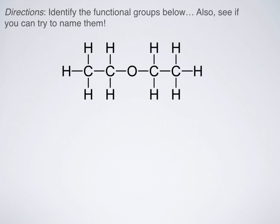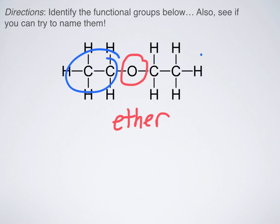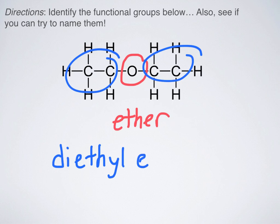What about this guy? Right here in the middle, I've got an oxygen. What group is that? It is an ether group. How do I name ethers? They all end in ether, but I have to tell what's on both sides of the oxygen. What are those groups called? They are ethyl groups, and I have two of them. So I have diethyl ether.